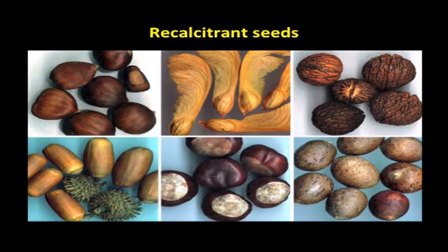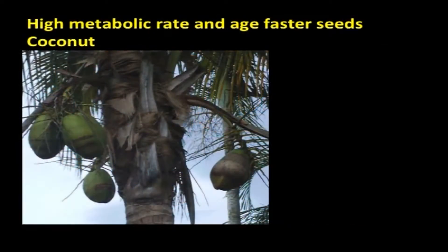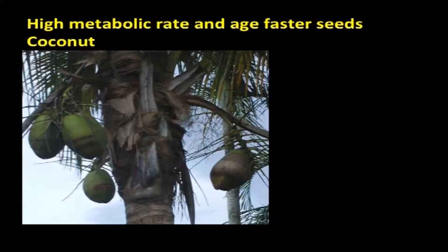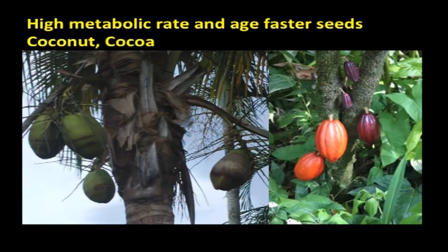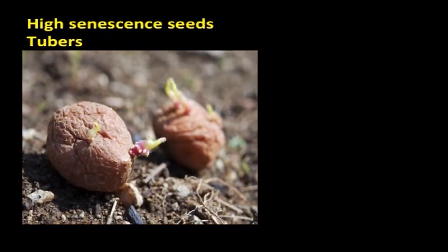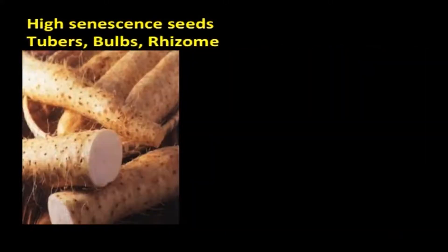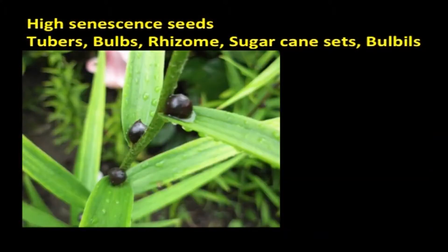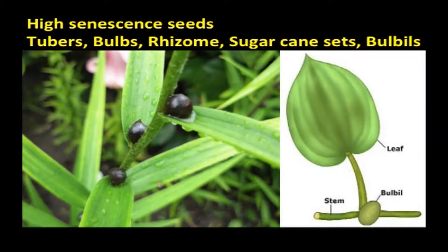Apart from microbiotic, mesobiotic, and macrobiotic seeds, a special category called recalcitrant seeds has a higher senescence rate because they do not undergo maturation drying. These seeds are shed from the mother plant with high moisture, thus having a high metabolic rate and aging faster. Seeds like coconut, cocoa, jackfruit, and jamun belong to this category. Similarly, tubers, bulbs, rhizomes, sugarcane sets, and bulbils also have high senescence because they are propagules that require high moisture to remain alive.